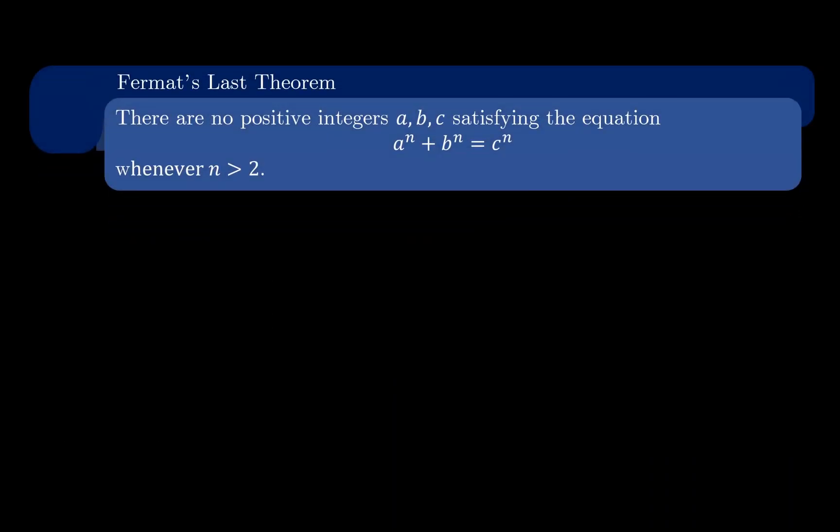To recap, Fermat's Last Theorem states that there are no positive integers a, b, and c satisfying the equation a^n + b^n = c^n whenever n is greater than 2.